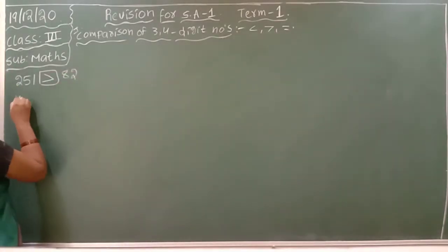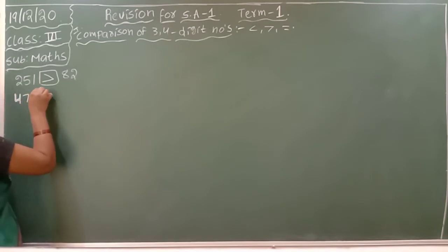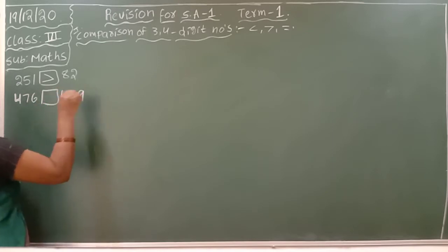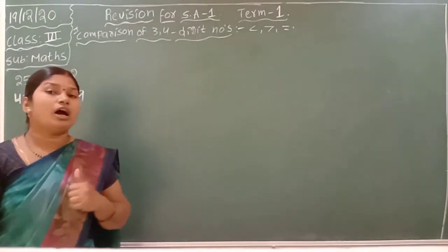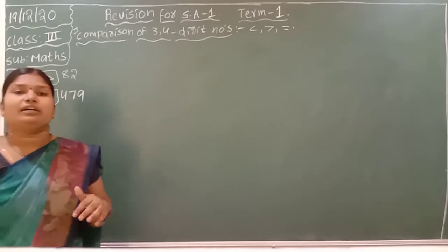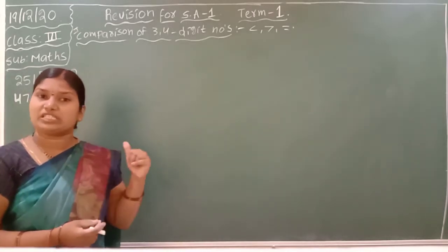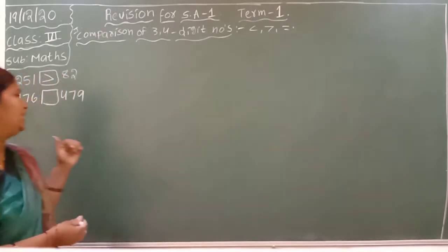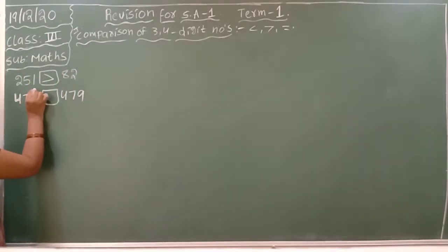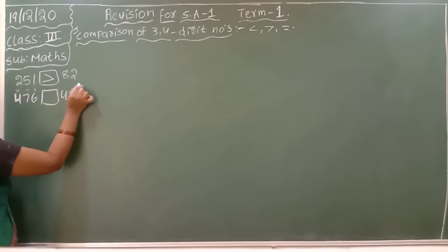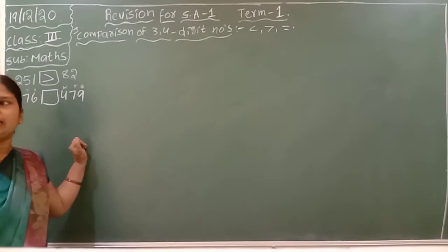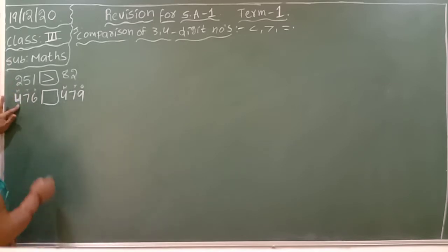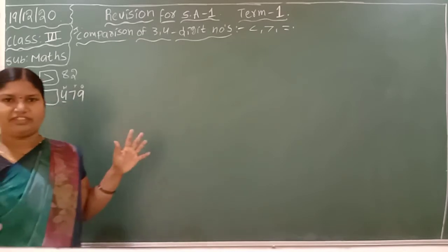One more example: 476 and 479. Here it is a 3-digit number and it is also a 3-digit number. How should you check? First of all, when we have to compare numbers, first compare the highest place value. In the given numbers, the places are 1s, 10s, 100s. The 100s place is the biggest. Check the 100s place first: 4 and 4 — same. Go for the next.